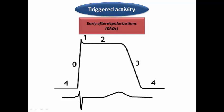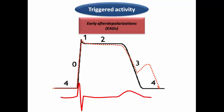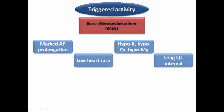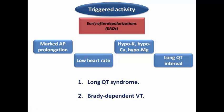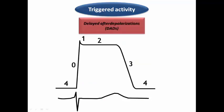Early afterdepolarizations (EAD) are a subtype of triggered activity, characterized by afterdepolarizations occurring in phase 3 of the action potential. They usually occur with marked action potential prolongation, bradycardia, hypokalemia, hypocalcemia, hypomagnesemia, and long QT interval. The two most famous types related to EAD are long QT syndrome and bradycardia-dependent VT.